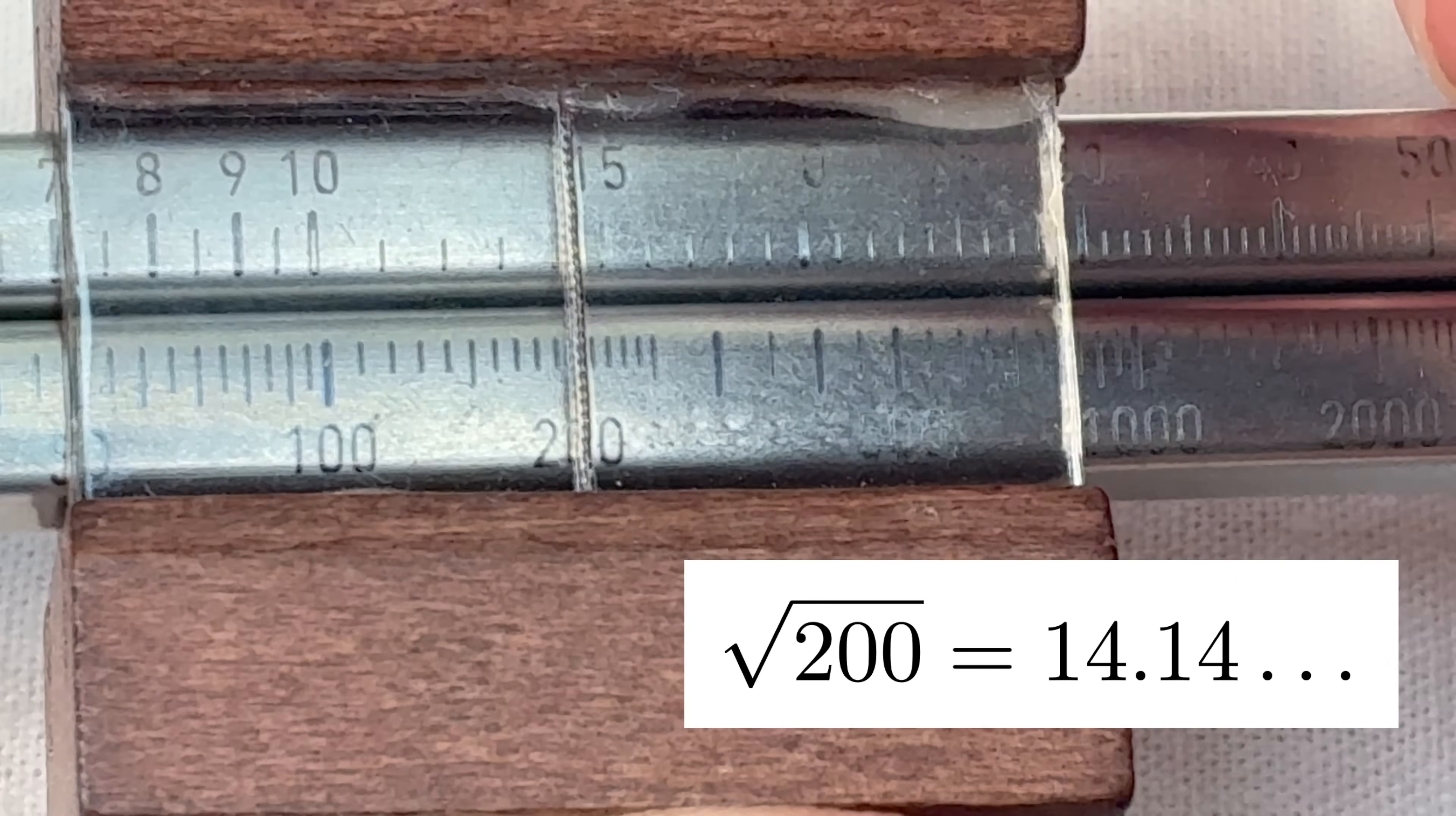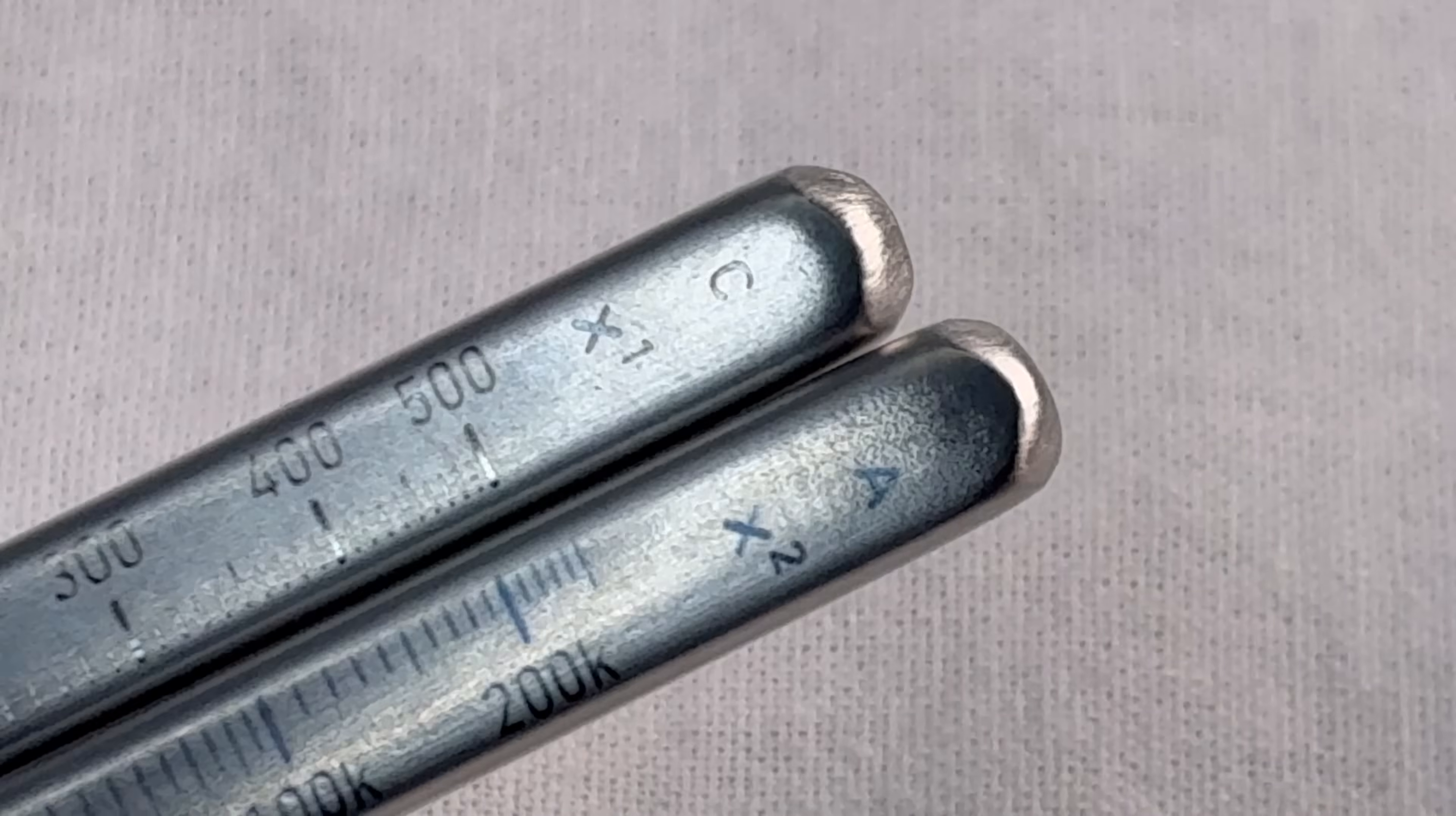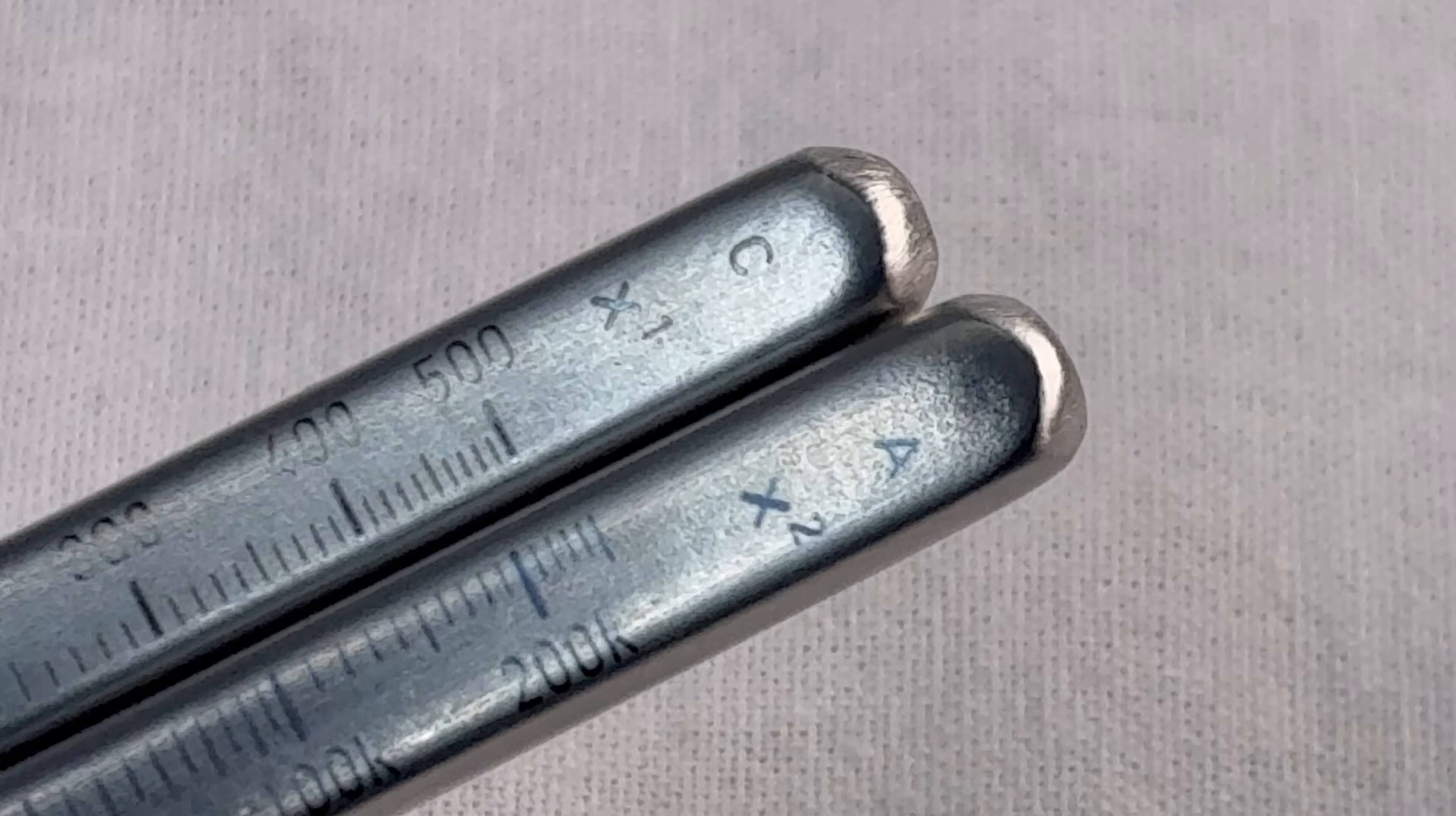Right at the top of the stick you can see these labels. The C and the A were the standard names for these scales in the old days, but they also wrote these x to the one and x squared just to help you remember what those are for, you know, for the kids who didn't grow up with the standard names.